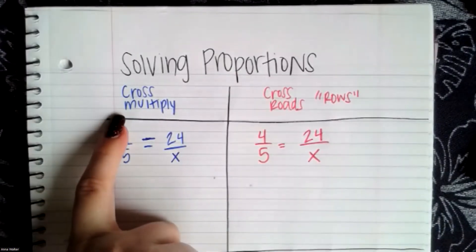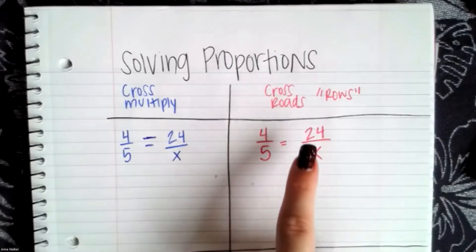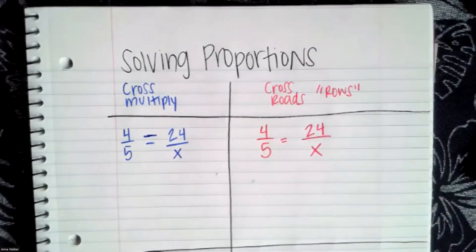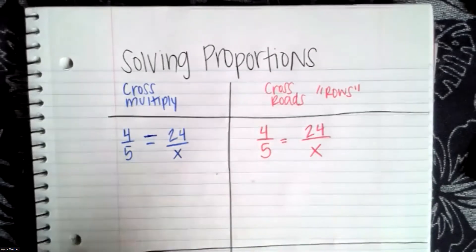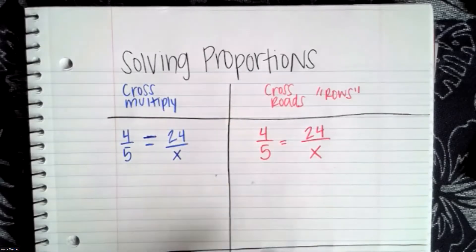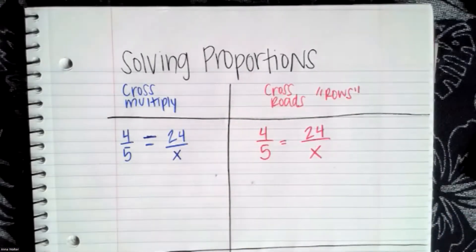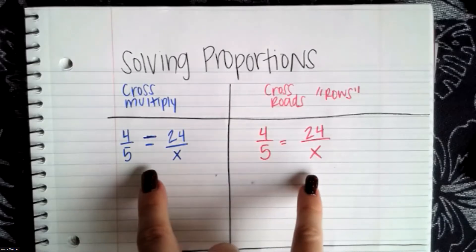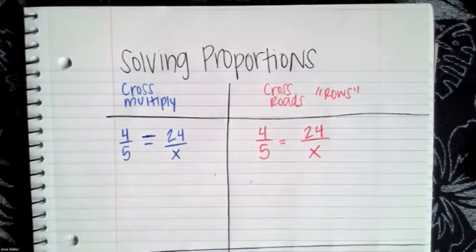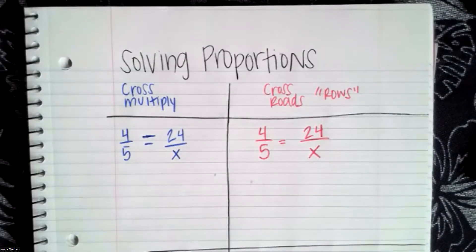What I need you to do is basically split your page into two columns. We're going to title one column cross multiply and the other column cross roads. I'm color coding if you like to color code, cross multiply in blue and cross roads in red. We're going to do the same problem twice and show you the two different methods. Go ahead and pause and copy this down.